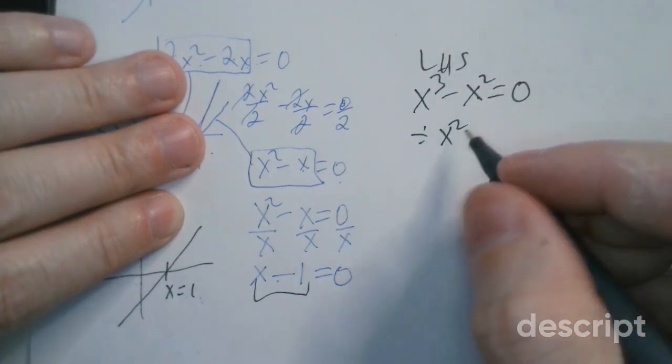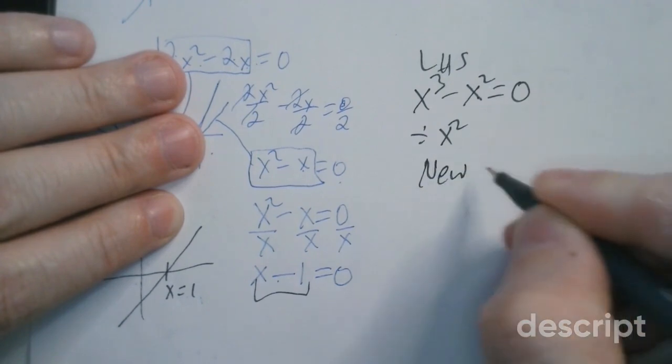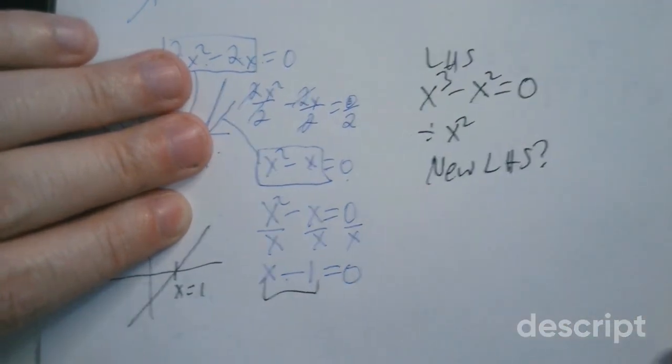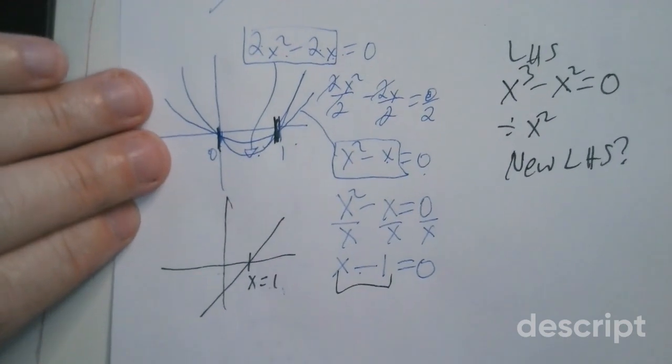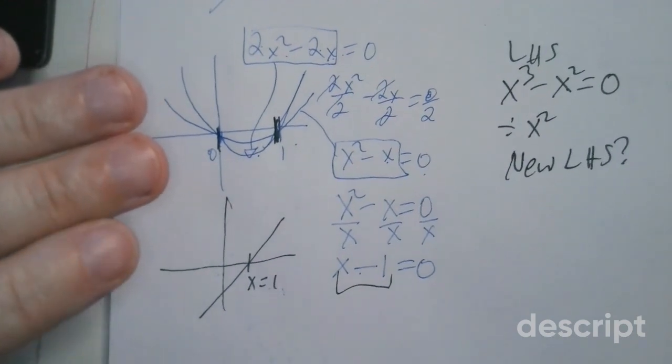And if you divide by x squared, what is the new left-hand side look like. And what happens during that division process, what disappears, for example, kind of important to understand.